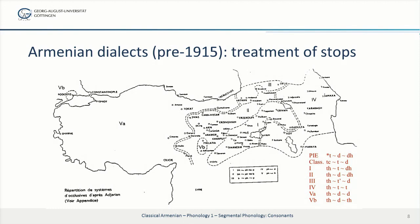Note that, for example, in the dialects of Group 5, we have this realization of the three series of consonants, whereas over in the East, in the Caucasus, we have the more familiar classical-looking system.